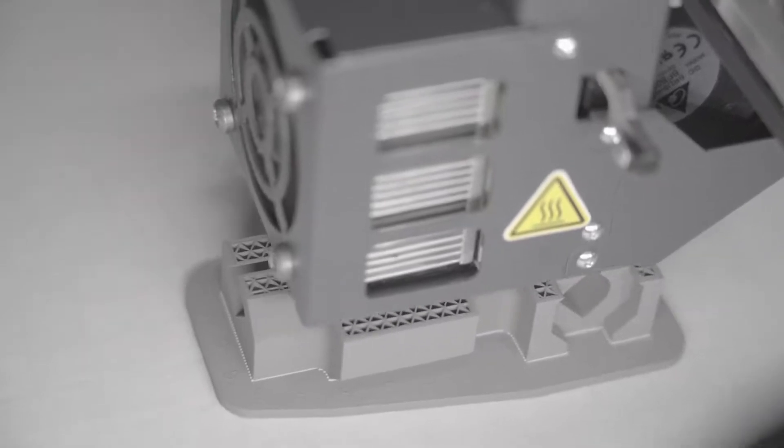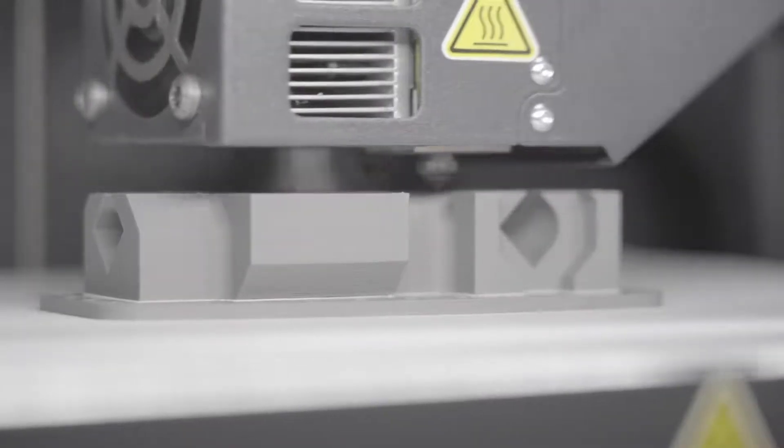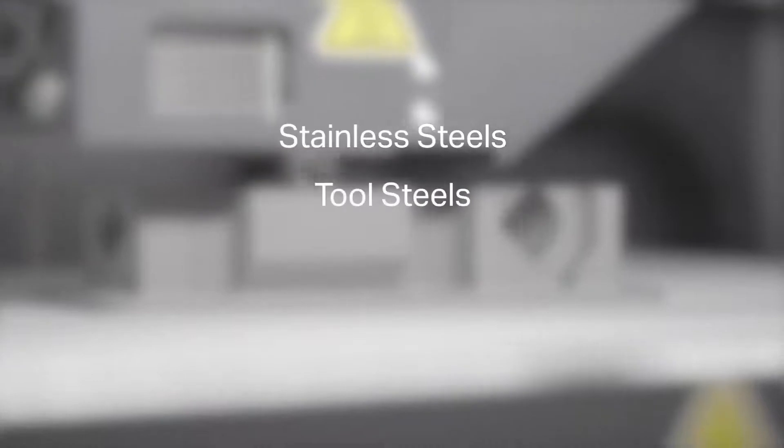The 17-4 stainless steel is loaded now. However, with a quick changeover, this system is capable of printing in stainless steels, tool steels, coppers, Inconel, along with several other materials currently in development.